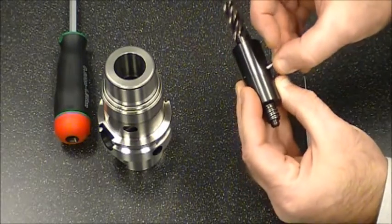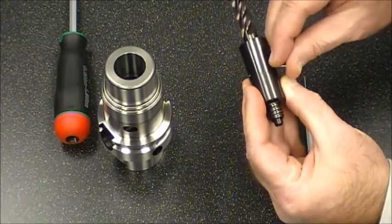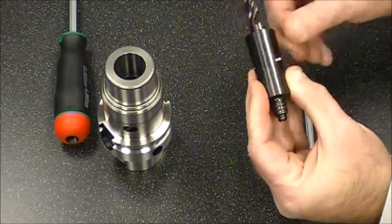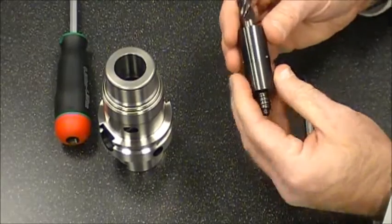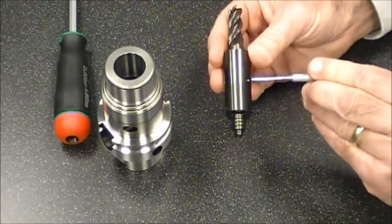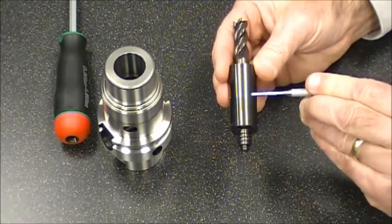Then we take the dowel pin and insert it in this cross hole, pressing it in as far as you can with your thumb. Using the pin punch that comes with the kit, simply push it until it bottoms out. This is a counterbored hole so it can't press all the way through.